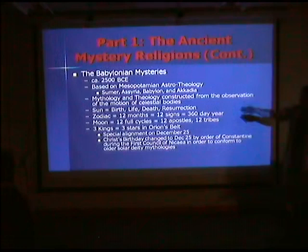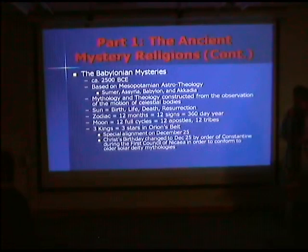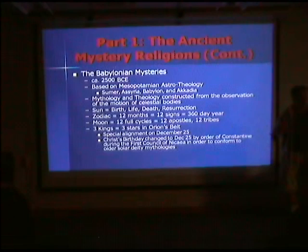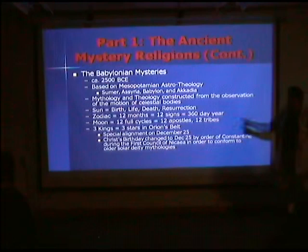The sun becomes the foundational structural symbol of all astro-theological myths. From the zodiac you get the twelve months, the twelve signs of the zodiac, which yields a 360-day year — they made up the extra five days. The moon had twelve full cycles during that period, which leads to the twelve apostles, the twelve tribes of Israel, and so on. All of the mythological structures we see in the Old Testament and older writings are based on astro-theological observations of the heavens.